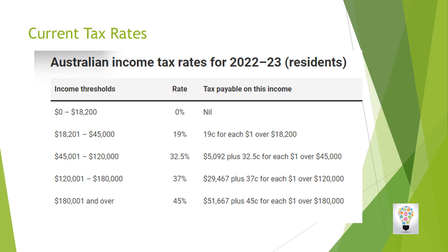The next bracket is $120,001 to $180,000, and over $180,000 you are paying 45 percent. Some people stop taking on part-time income at certain stages because they have to pay more tax — that is up to personal opinion, but most people like to work hard and save money.